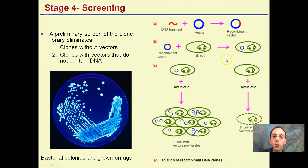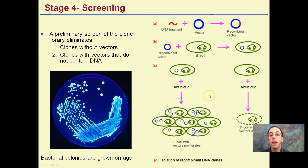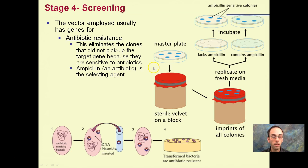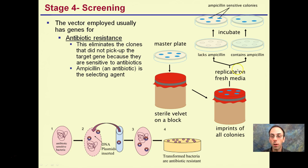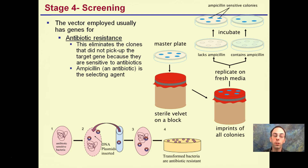Stage four is screening. The primary screen of the clone library eliminates clones without vectors, those that don't have the gene of interest, or clones with vectors that don't contain the right DNA. Not all cells will take up the particular plasmid — some will take up the vector without the gene of interest. Screening can be done via antibiotic resistance or color on agar. Ampicillin is a very common antibiotic used — cells with the gene of interest also have the antibiotic resistance gene and can break down ampicillin and survive, while other cells cannot.